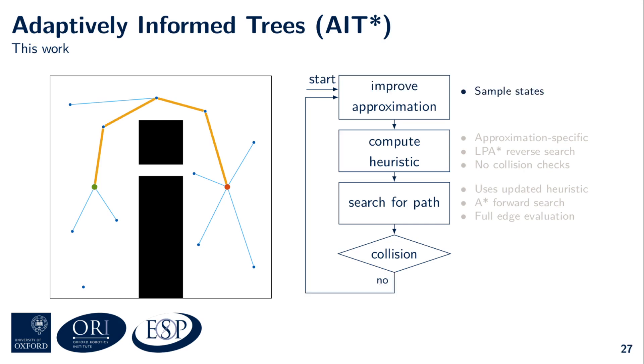AIT* continues improving the solution it has just found by improving the approximation. The state in the bottom left corner can now be pruned, as the dashed red path is longer than the solution. To keep this illustration simple, I'm only going to add two lucky samples to the approximation when AIT* samples more states. Improving the approximation invalidates the admissibility of the heuristic, which is why the heuristic needs to be updated.